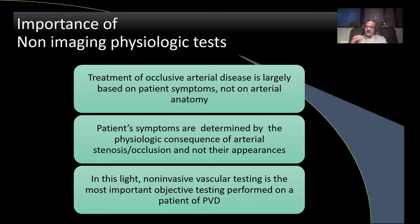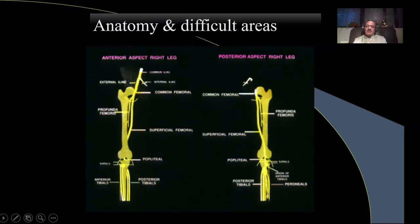This is important because treatment of peripheral arterial disease is symptom-based, not anatomy-based. Anatomically you can have large lesions where the patient is not symptomatic and we don't treat them aggressively. Conversely, sometimes the anatomical lesion is small but symptoms are more prominent, and we need to treat aggressively — especially when the patient is young.